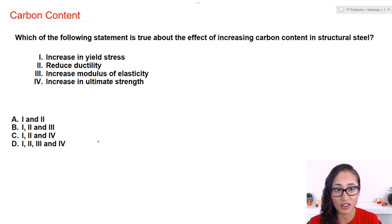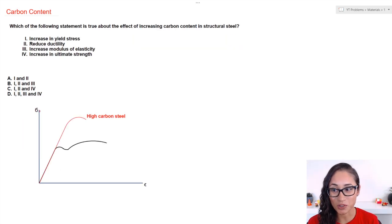At the stress and strain graph for the high carbon content structural steel and normal carbon content, let's compare those two. So this is our stress and strain diagram. This graph here represents the high carbon steel, this one represents the normal carbon content steel.